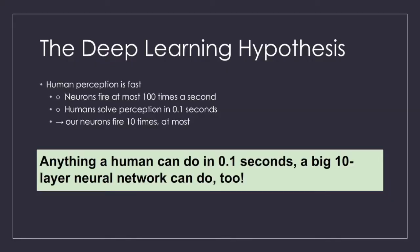Deep Learning Hypothesis. It is known that human perception is fast. Also, neurons fire at most 100 times a second. Humans solve perception in 0.1 seconds. Thus our brain neurons fire 10 times. So the hypothesis says that whatever the human can do in 0.1 seconds, a big 10 layer neural network can do it too.